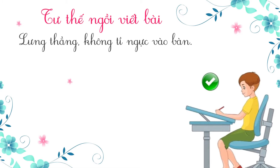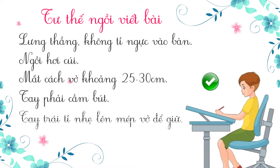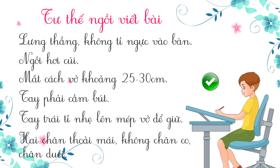Lưng thẳng, không tì ngực vào bàn. Ngồi hơi cúi. Mắt cách vở khoảng 25–30cm. Tay phải cầm bút. Tay trái tì nhẹ lên mép vở để giữ. Hai chân thoải mái, không chân co chân duỗi.